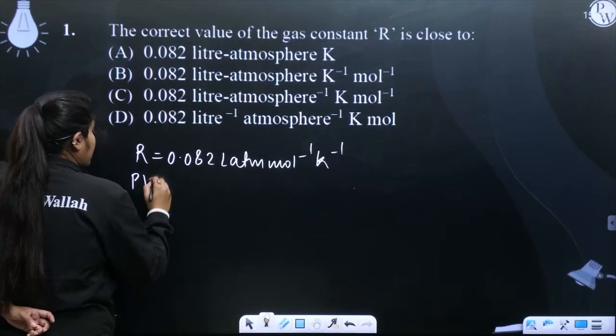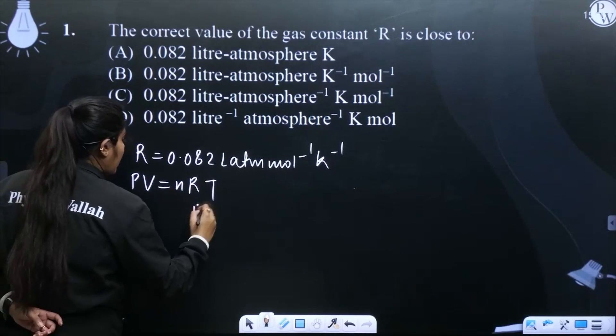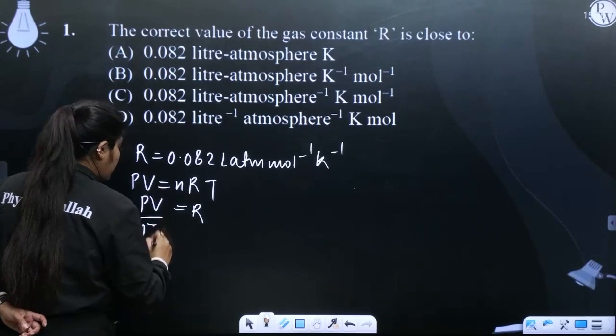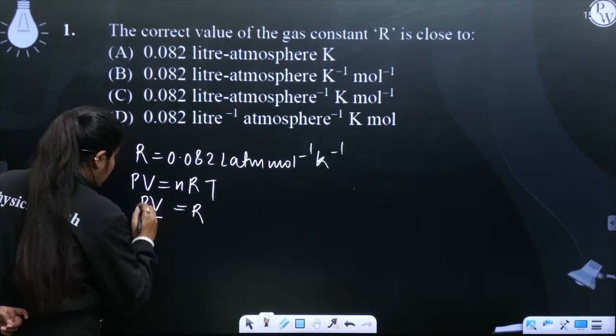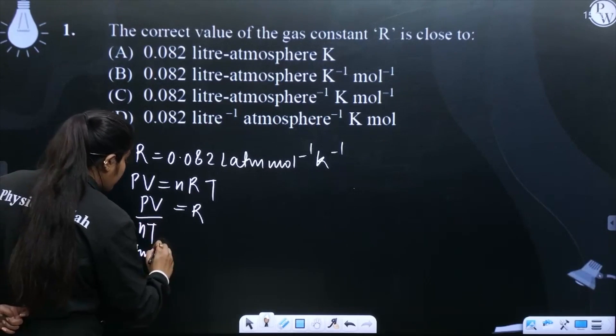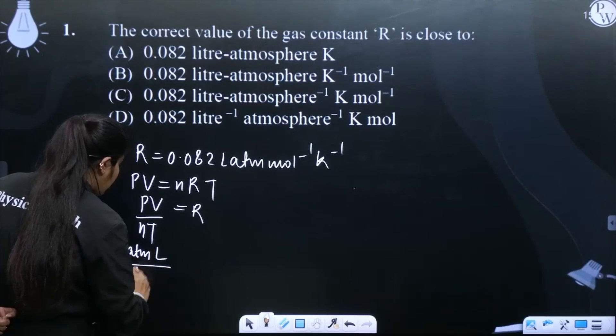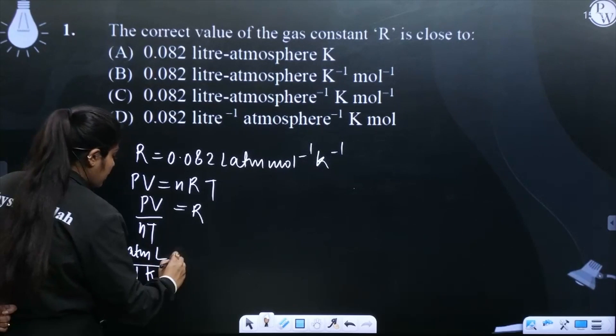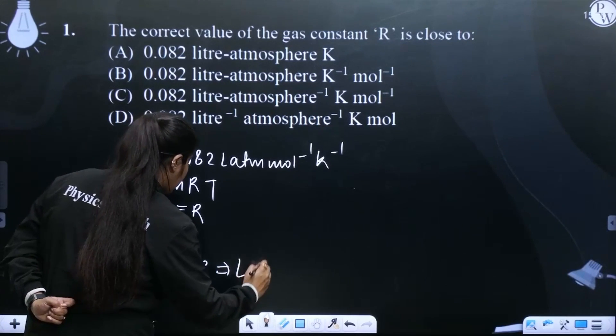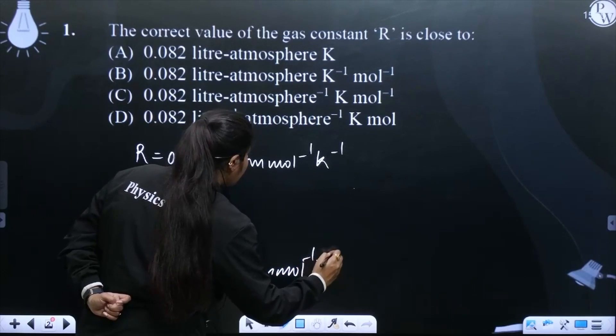How? What is the ideal gas equation? PV equals nRT. So if we solve for R, that will be equal to PV upon moles into temperature. The unit of pressure is atm, volume is liter, n is number of moles, and temperature is kelvin. So basically, the unit of R becomes liter atm mole inverse kelvin inverse.